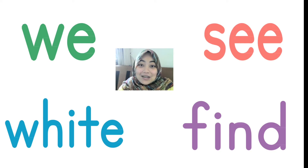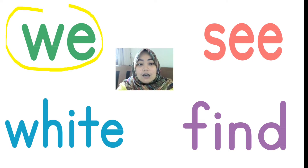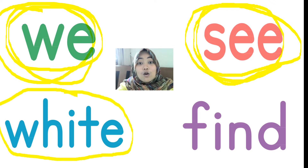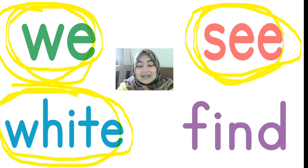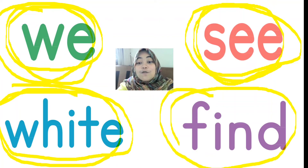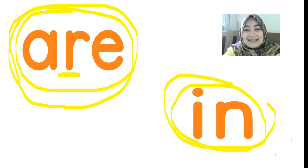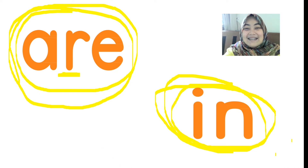So now we are going to review sight words. These are the sight words: we, we, see, see, white, white, find, find, are, are, and then the last one is in. In. Good job.